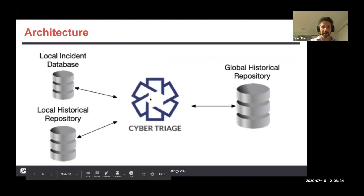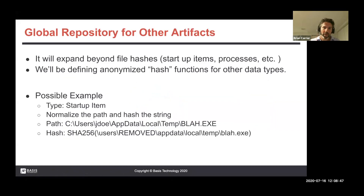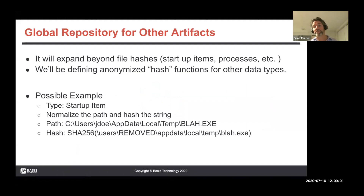Here's the architecture: we have the local incident database, local historical repository, and then access to this global historical repository to get information on frequency analysis in the community. After we roll this out, there are also plans to roll this to other artifact types. Starting with file hashes is easy — we understand file hash functions — but the idea is to extend that concept to other data types besides just file content.